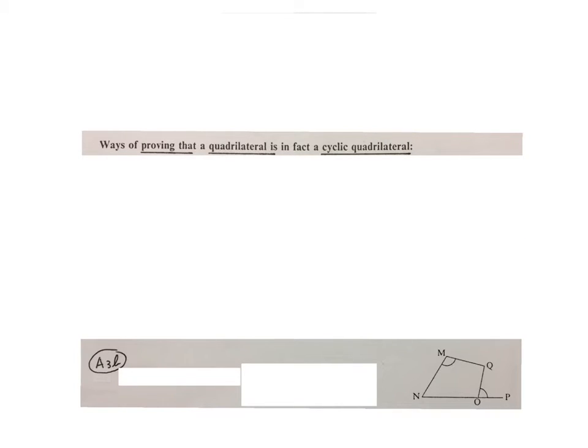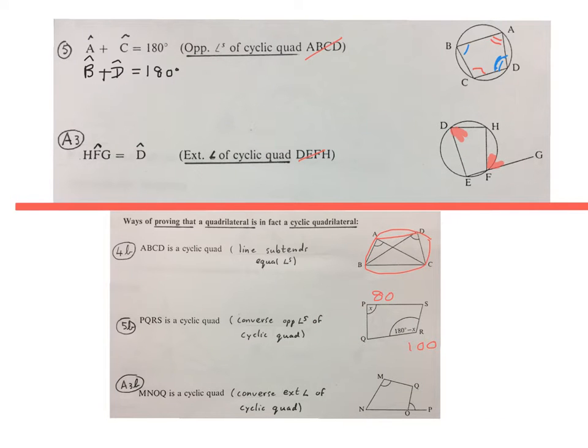The last way to prove that something is a cyclic quad is if you have a quadrilateral, which we have here. There's a straight line going out. That's an exterior angle, and you can find out whether that angle and that angle is equal. And they told us so here. Then you write, MNOQ is a cyclic quad. The reason is, Converse exterior angles of a cyclic quad. Please stop the video and look at the two facts and theorems on what a cyclic quad is and how to prove that something is a cyclic quad.